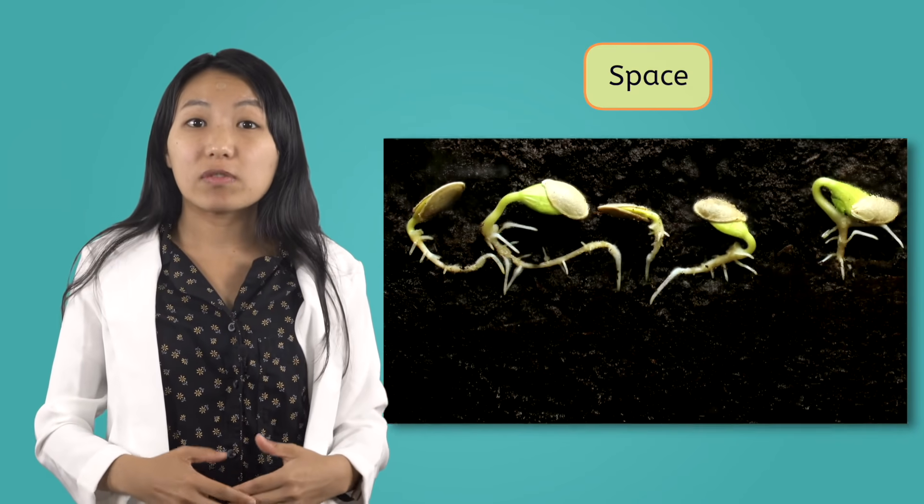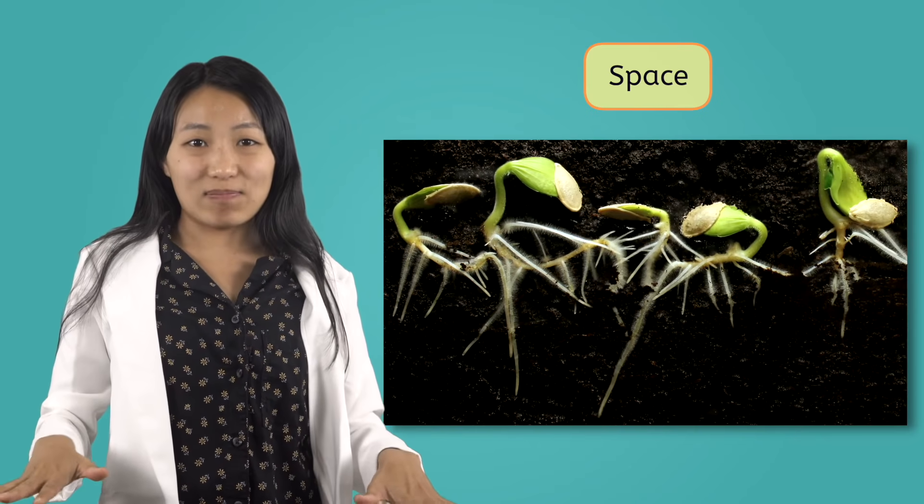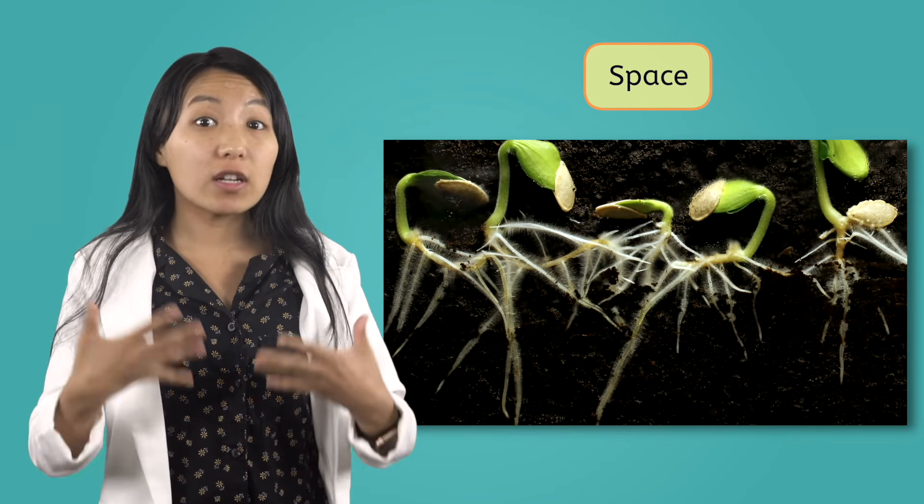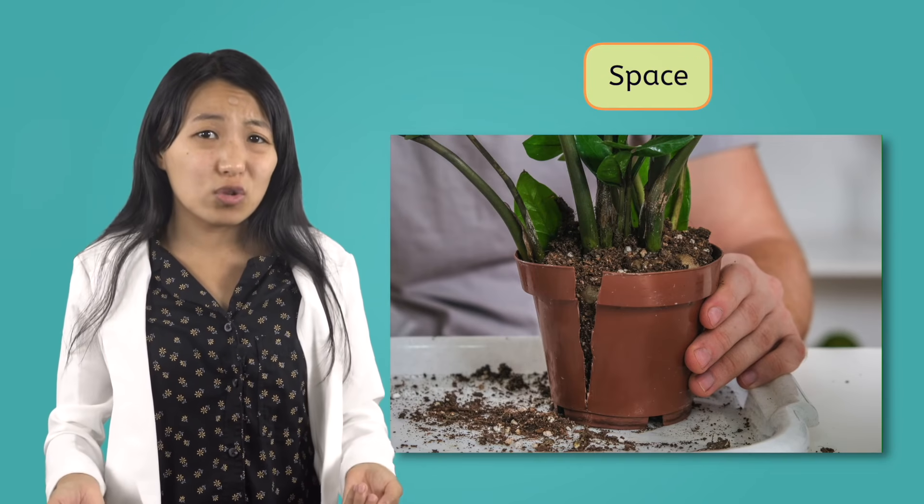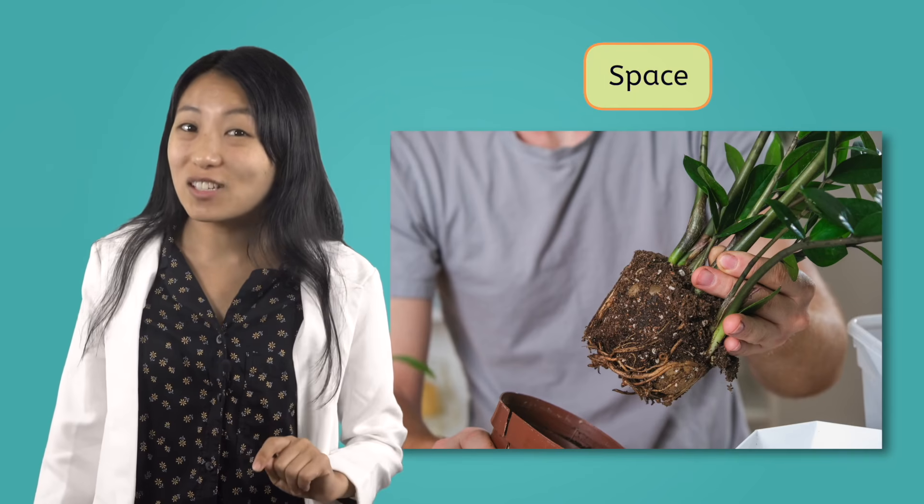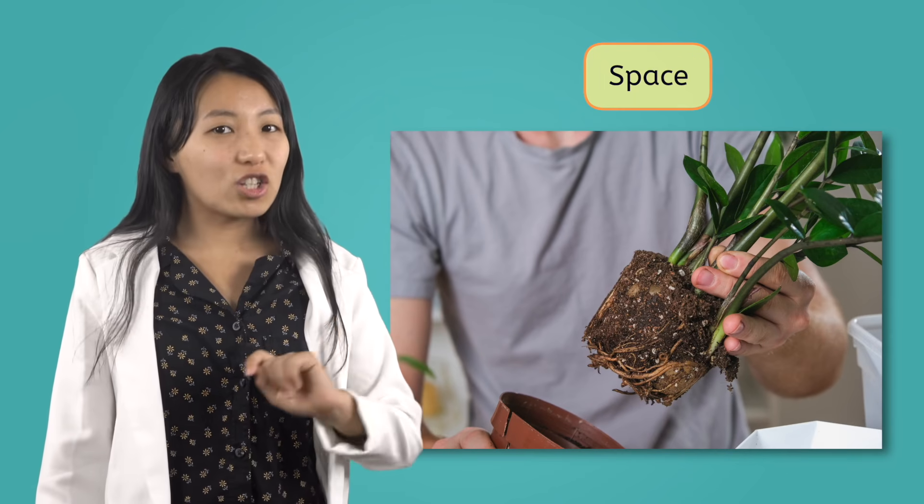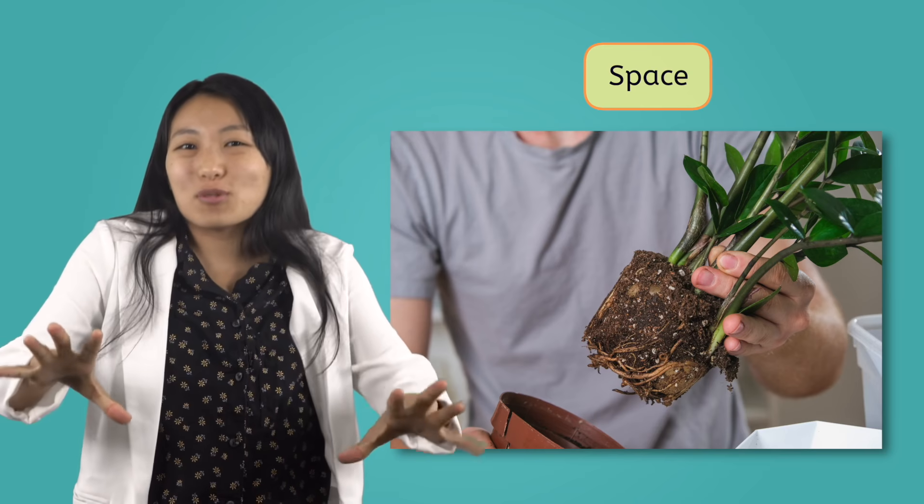Plants need space too. Soil gives plants a place to put their roots and get nutrients. If the roots don't have enough space to grow, the plant might not be able to get enough nutrients and will stop growing. Not all plants need soil in order to grow, but all plants need enough space to stretch their roots.